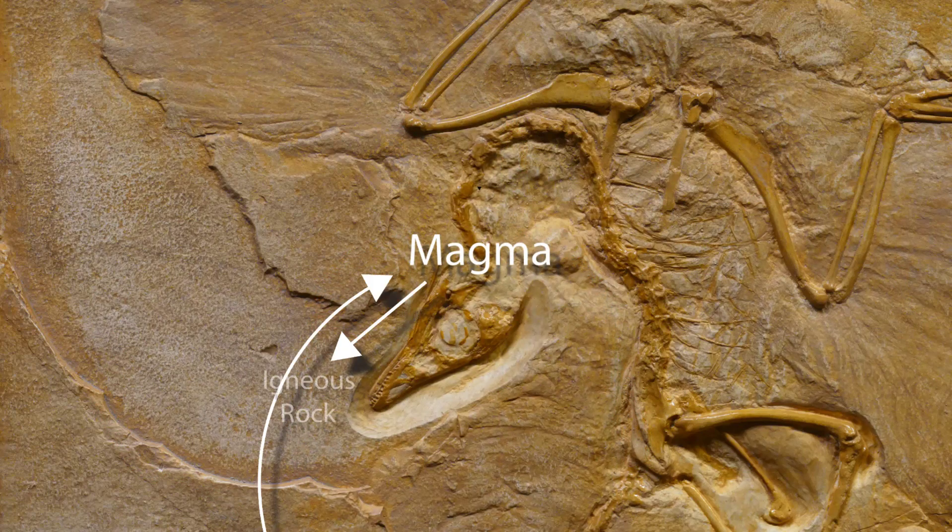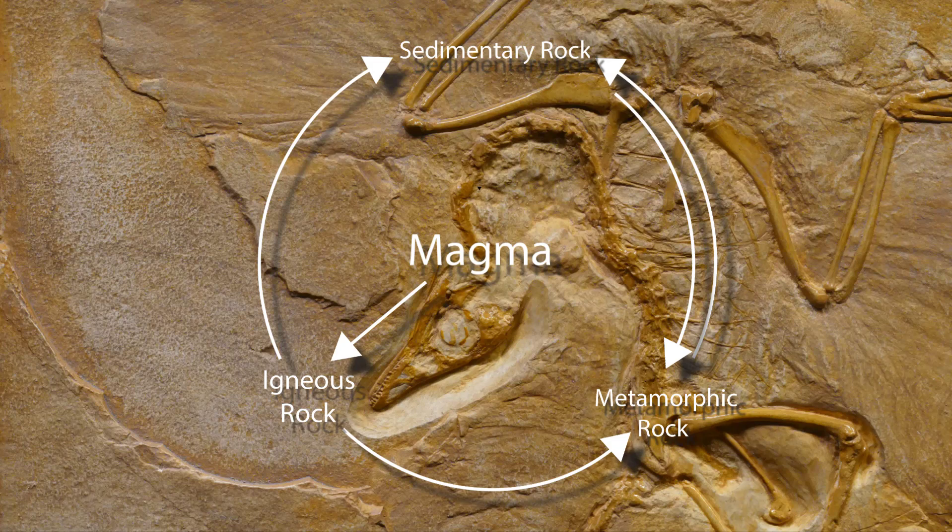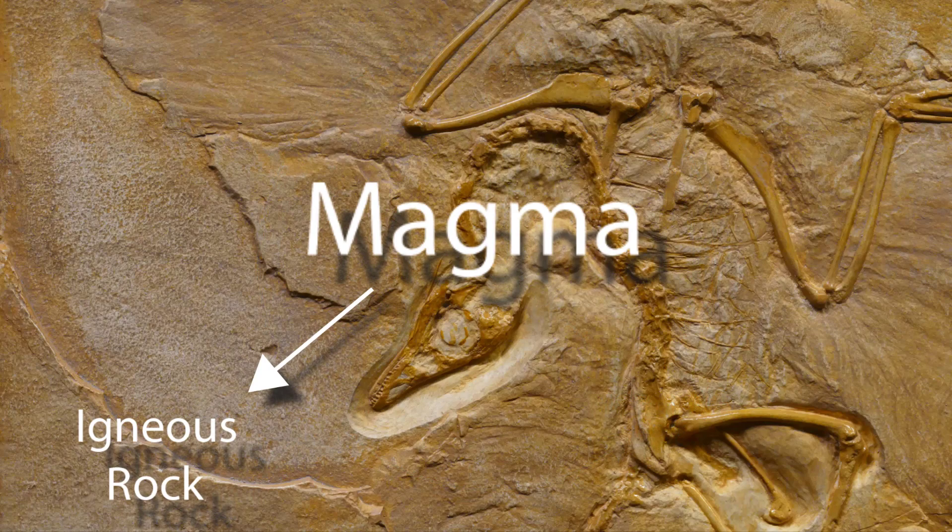You see, rocks are constantly changing form from one kind of rock into another kind of rock. And sometimes they even end up back where they started as liquid magma, and so the whole cycle starts again. So let's start with magma and how magma becomes what is called igneous rock.